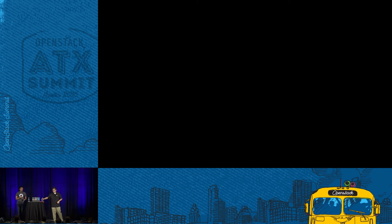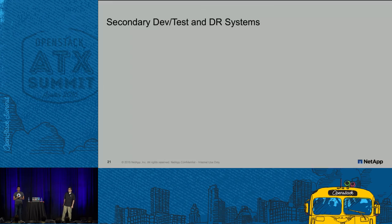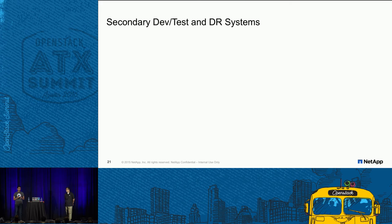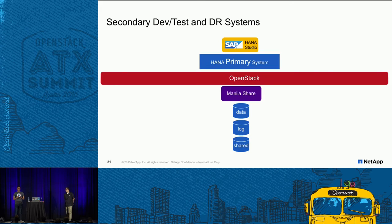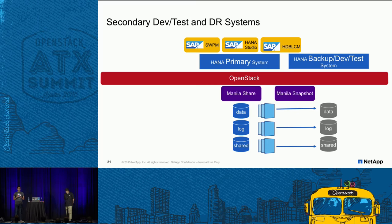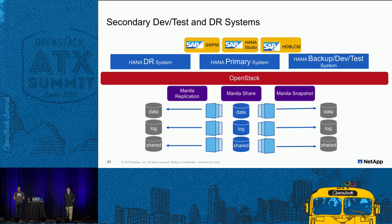That was a simple backup and recovery workflow for a database. But this is not the only use case for enterprise-class applications. Manila snapshots can also enable HANA dev/test or backup system creation — applicable to all SAP systems. Manila replication technology, combined with the right SAP tools, can address disaster recovery. Features like replication and consistency groups are important for onboarding traditional enterprise applications.